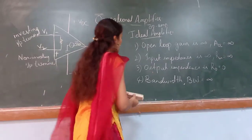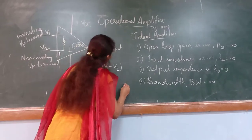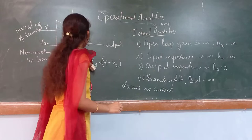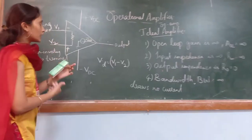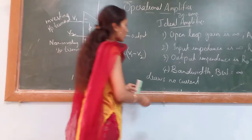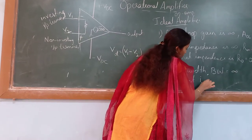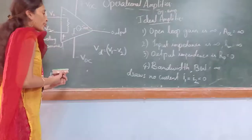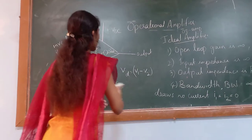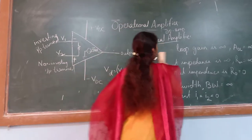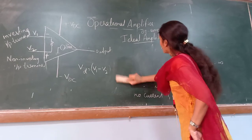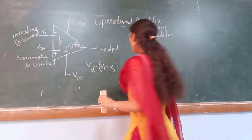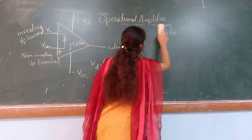Ideally, the op-amp draws no current. So the current to the input terminals — both inverting and non-inverting — I1 and I2 are equal to zero. For the inverting input terminal I1 equals zero, and for the non-inverting terminal I2 equals zero. For this operational amplifier, we are giving the differential voltage as input. Now I am explaining the inverting and non-inverting amplifiers.